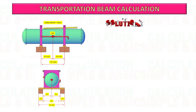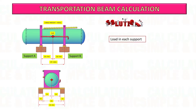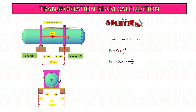Start to calculate the load in support A and support B by multiplying the total weight of the cargo by D2 or D1, and dividing by the total distance of the two supports. After getting the value, convert this from tons to kilonewtons.